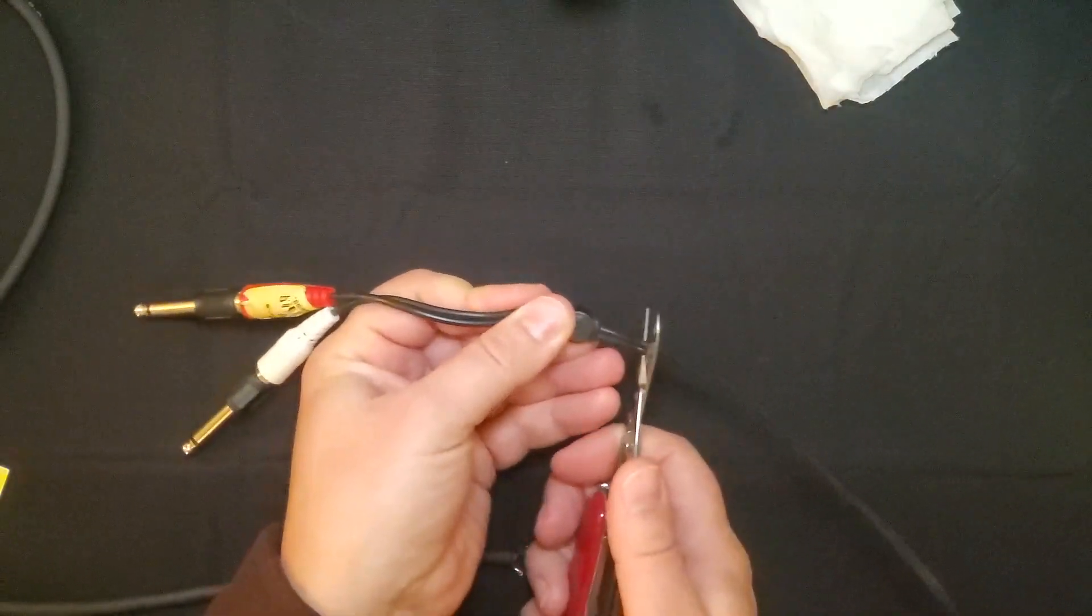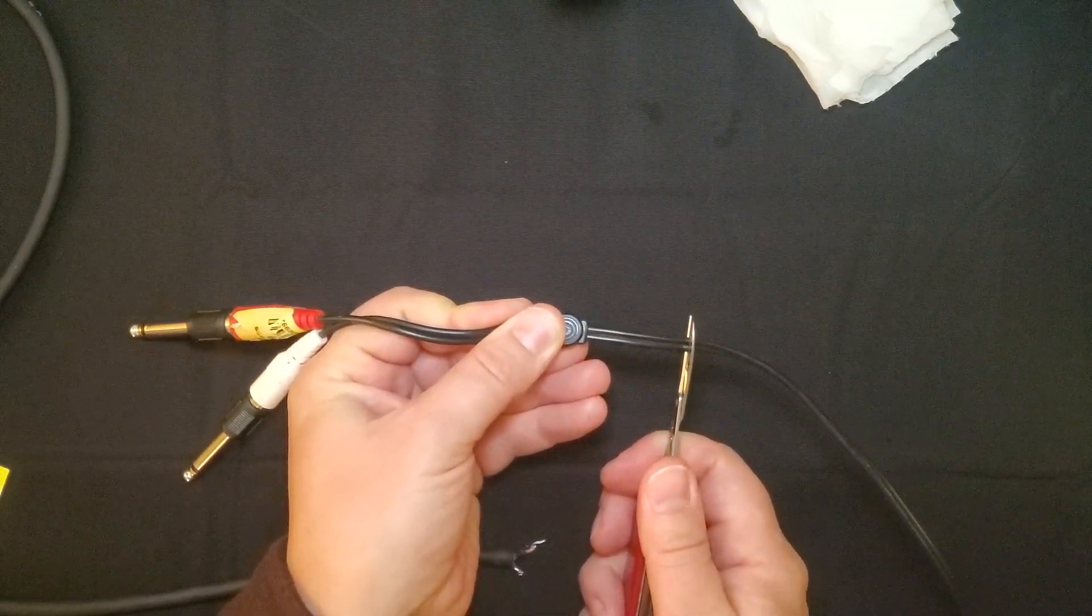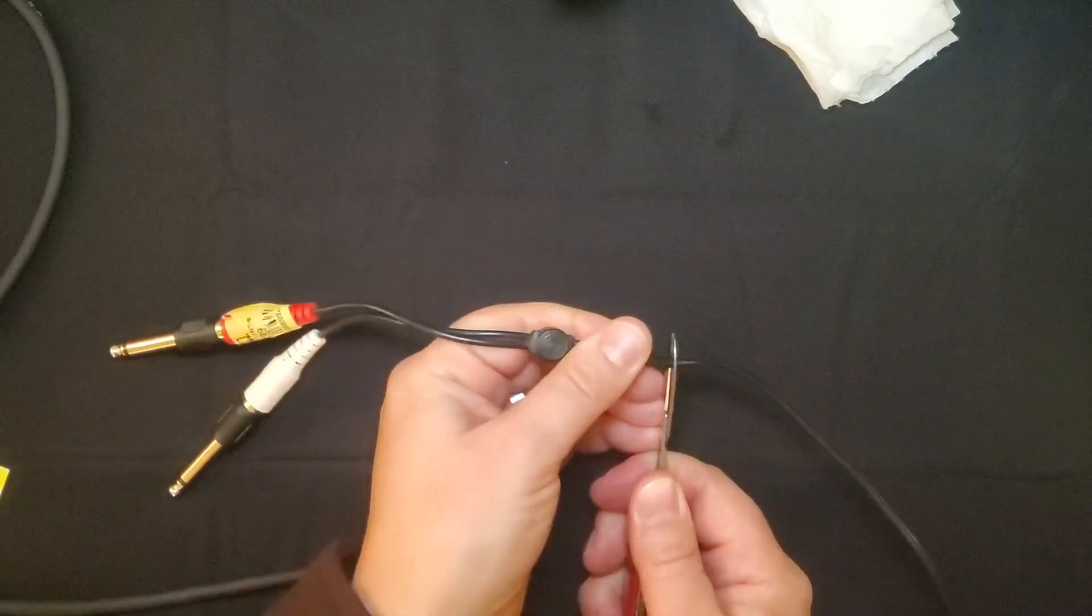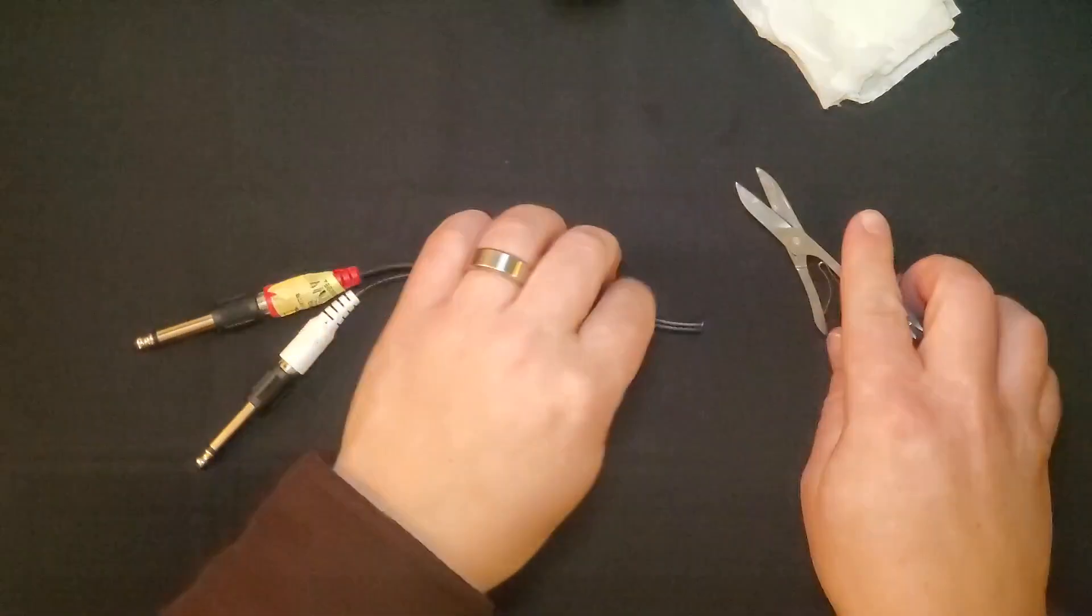So I'm going to cut this wire so that I can start to take the black sleeve off and expose the copper strands inside, so that I can get them ready to connect to the stereo cable that you saw before.